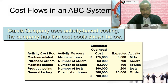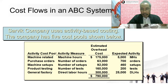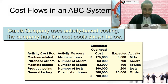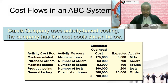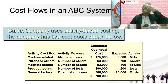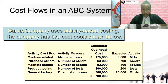The company has five cost pools: machine-related, purchase order, machine setup, product testing, and general factory activity. Cost pool means the type of activity. The activity measures are machine hours, number of orders, number of setups, number of tests, or direct labor hours. Those are examples of activity cost pools and activity measures for Sarvik Company.